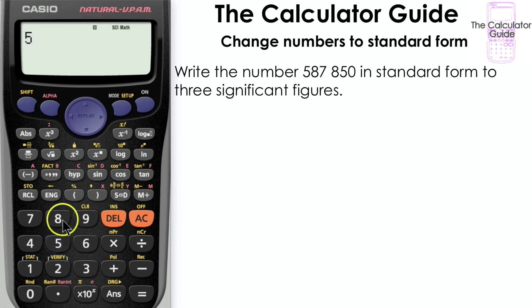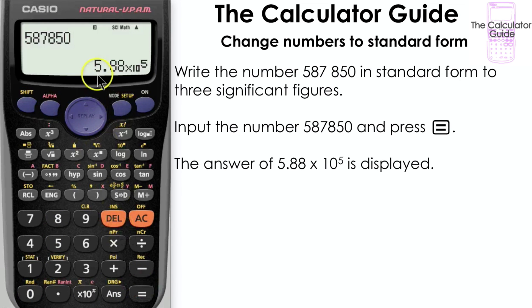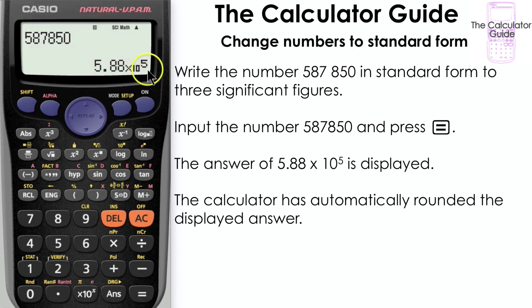Let's input the number now: 587,850 and press equals. The answer is 5.88 times 10 to the power of 5 and it's displayed here. Notice how the calculator has automatically rounded our displayed answer.